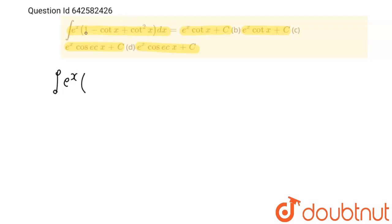there is 1 plus cot square x and we all know that cosec square x is equals to cosec square x is equals to 1 plus cot square x.